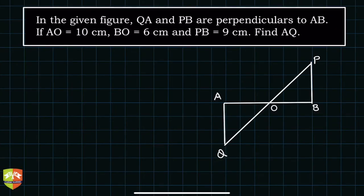Hello and welcome to another problem solving session on triangles. The question here says that QA and PB are perpendicular to AB.